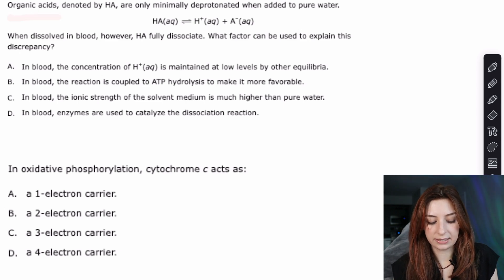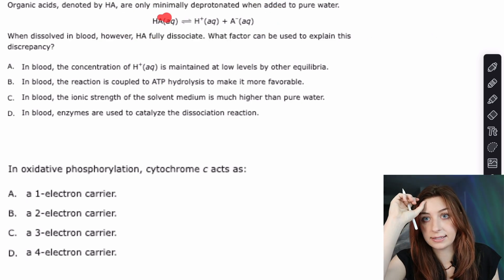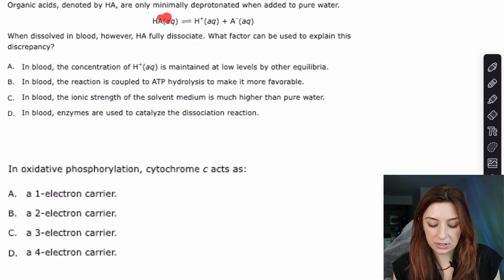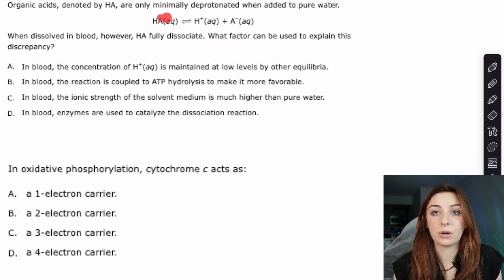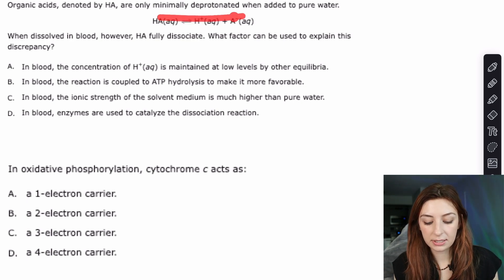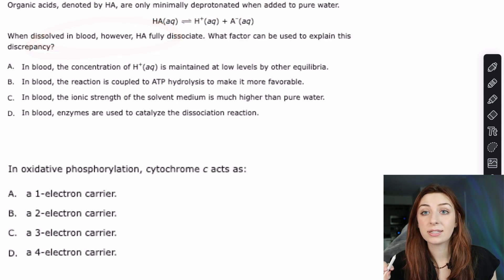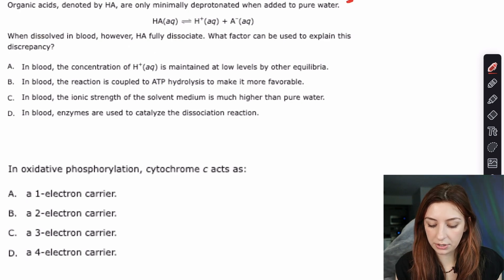Number 15. Organic acids denoted by HA are only minimally deprotonated when added to pure water. When dissolved in blood however HA fully dissociates. Which factor can be used to explain this discrepancy? So I don't want you guys to go into the answer choices immediately. I want you guys to simplify the question stem first and think about what you want the answer choice to be. They only minimally deprotonate in water but they dissolve fully in blood. So really the question is what's the difference between water and blood when it comes to the dissolution of an acid? Water is a pH of 7. Blood is a pH of 7.4.